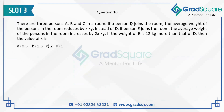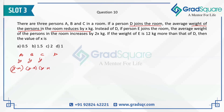Three persons A, B, C are in the room. If a person D joins the room, then the average weight of the persons in the room reduces by X. Suppose the average of A, B, C was Y, and then person D comes in, because of which the average is reducing by X. So now the average becomes Y minus X for each of the four individuals.